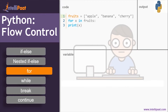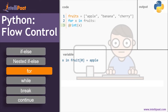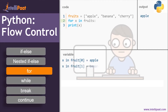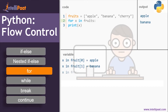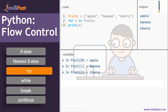Let's understand this with an example. We define a list: fruits equals apple, banana, and cherry. For X in fruits — X at index zero is Apple, so print X outputs Apple. Then go back: X at index one is Banana, so print X outputs Banana. Then X at index two is Cherry, so print X outputs Cherry. Nothing is left in the list, so the final output is apple, banana, and cherry.